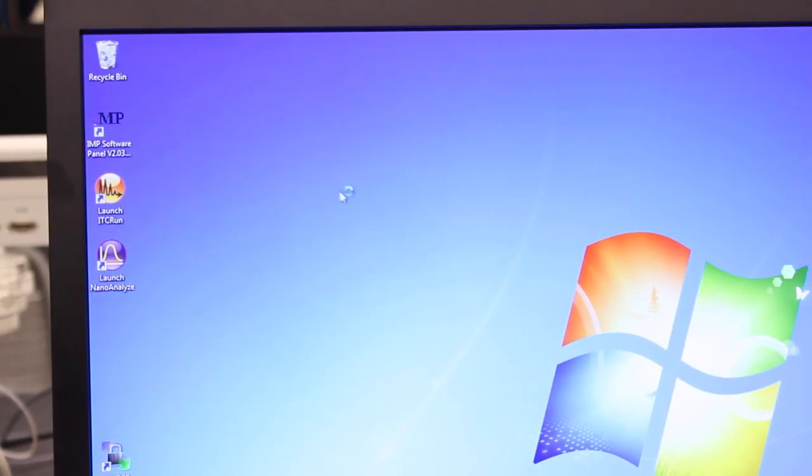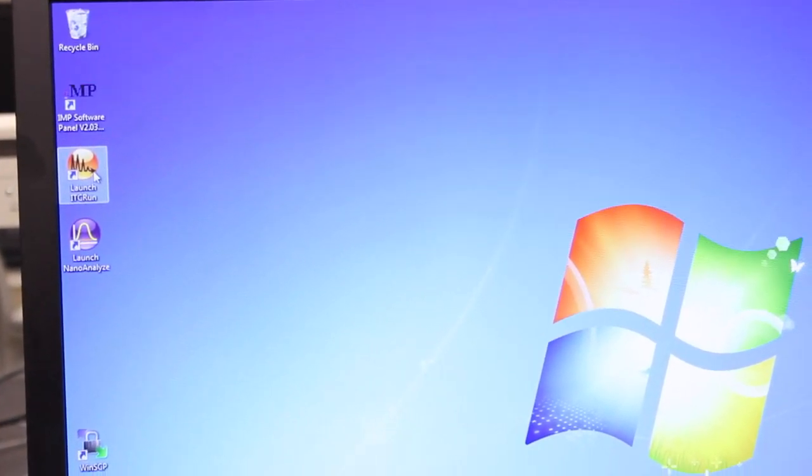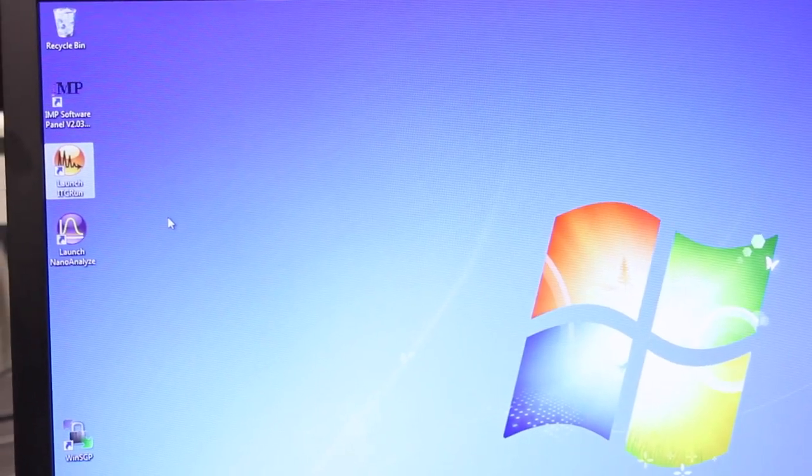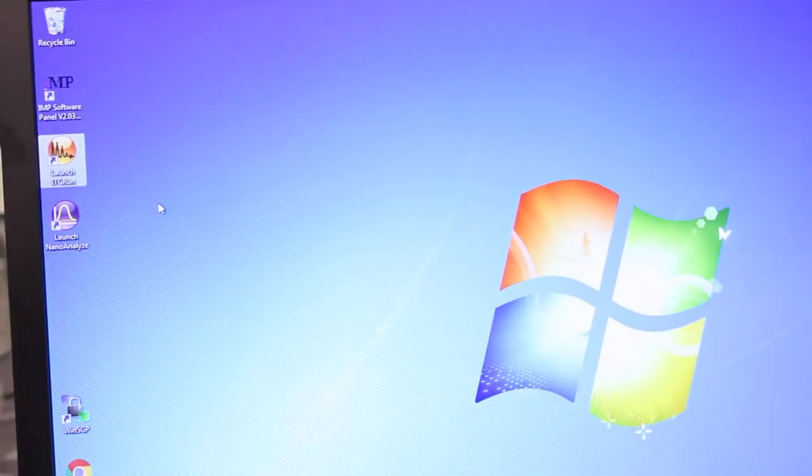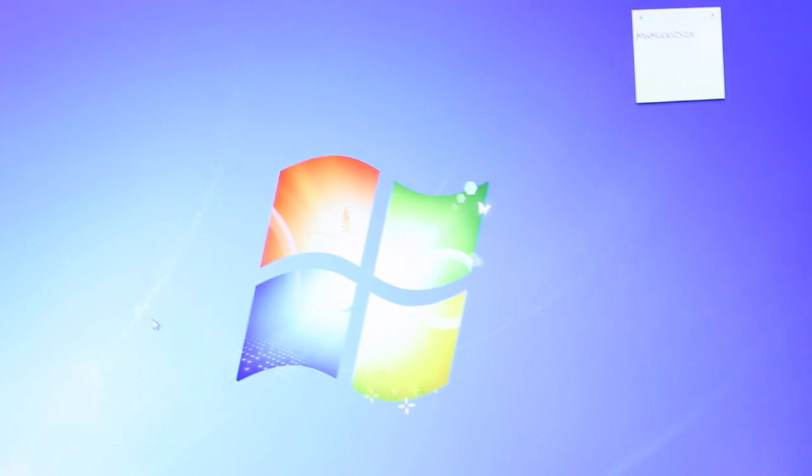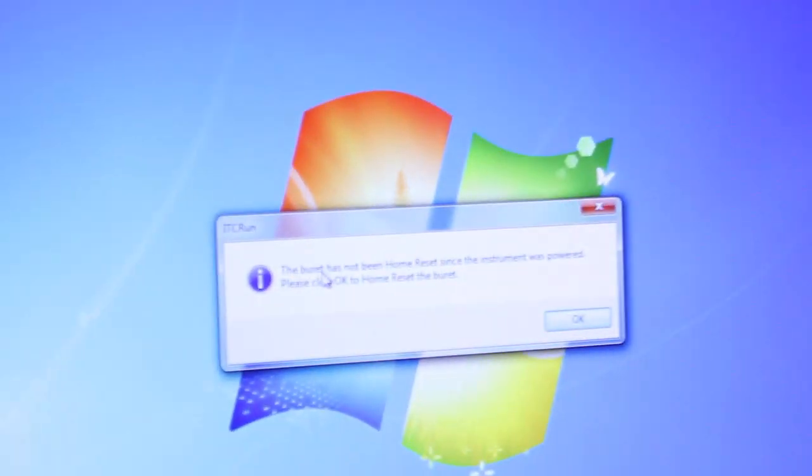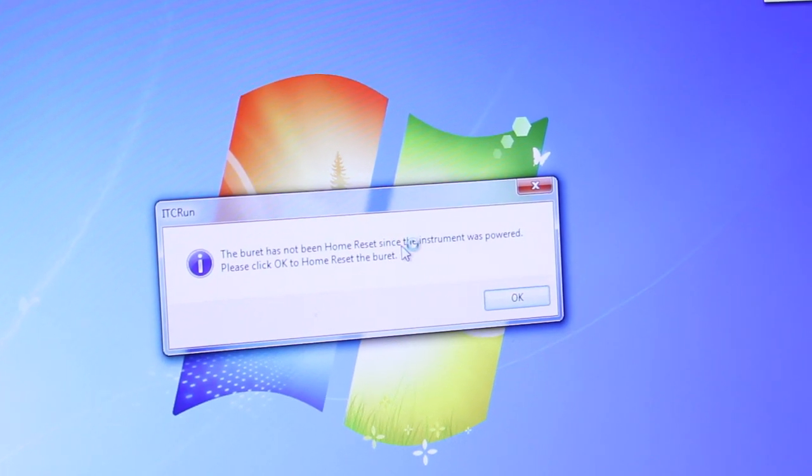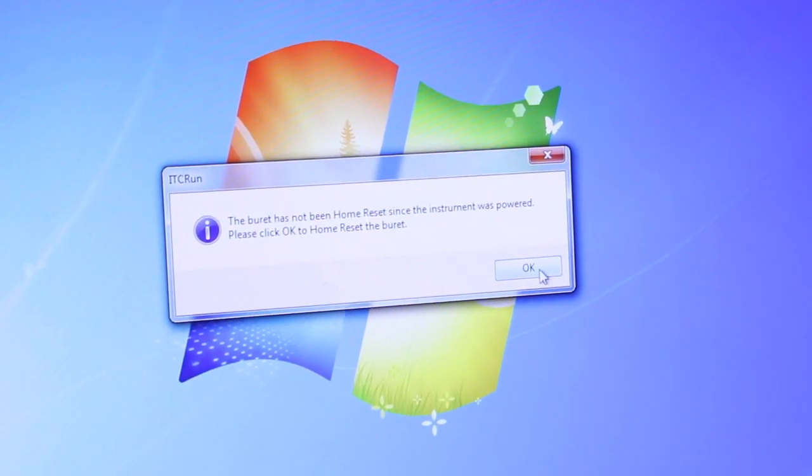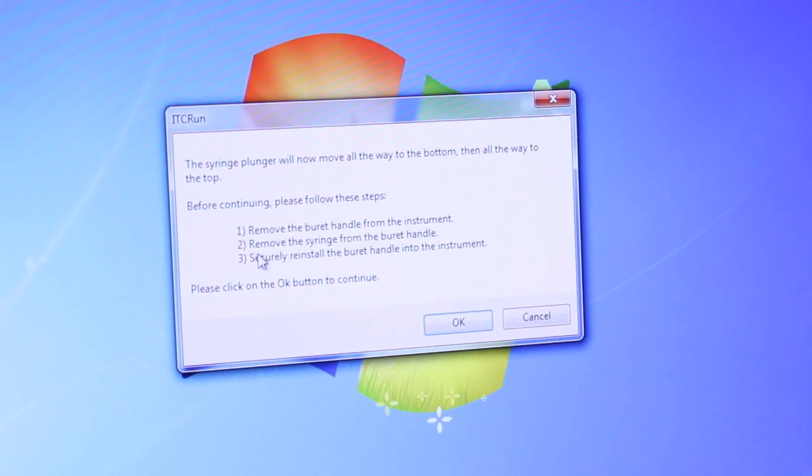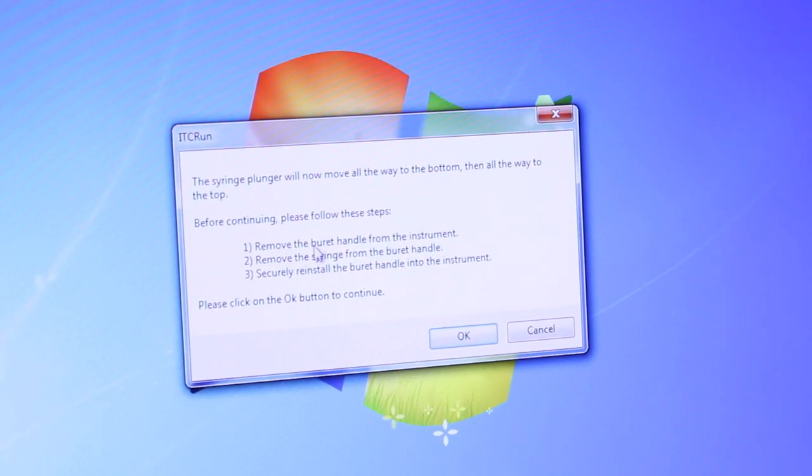After you log in, you're going to launch the ITC run program. It will come up with a window telling you that the instrument needs to have the burette be home reset, so click the OK button, and it will give you instructions about how to allow the home reset procedure to occur.